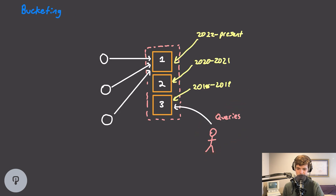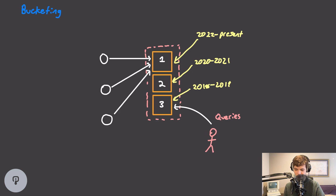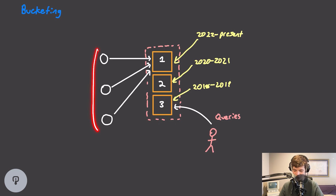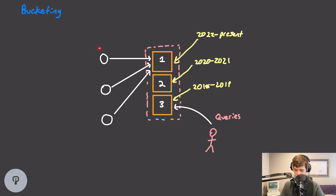Instead of sharding with a hashing algorithm, a better solution might be bucketing, where each node is responsible for a certain time range. For example, the first node might cover 2022 to now, the second might cover 2020 and 2021, and the third might cover 2018 and 2019. This solves our query problem nicely — if we're looking for a certain time period, the person querying can find that entire time span on a single node. However, we now have the problem that all current logs are being sent to just the first node responsible for present-time data, reintroducing the single-node write bottleneck.